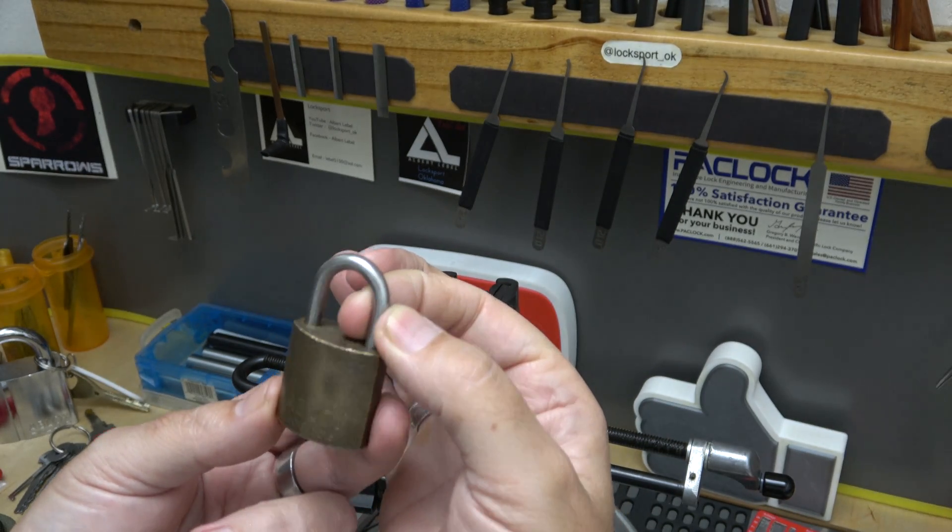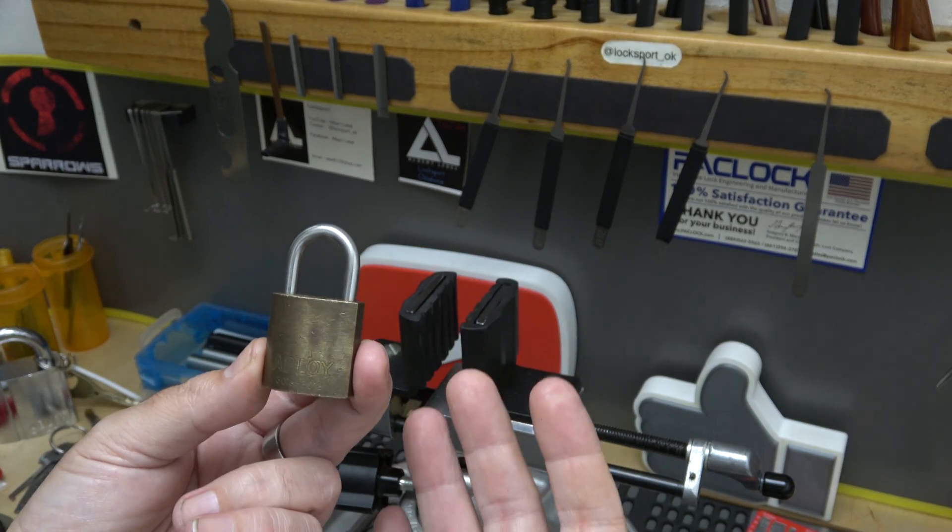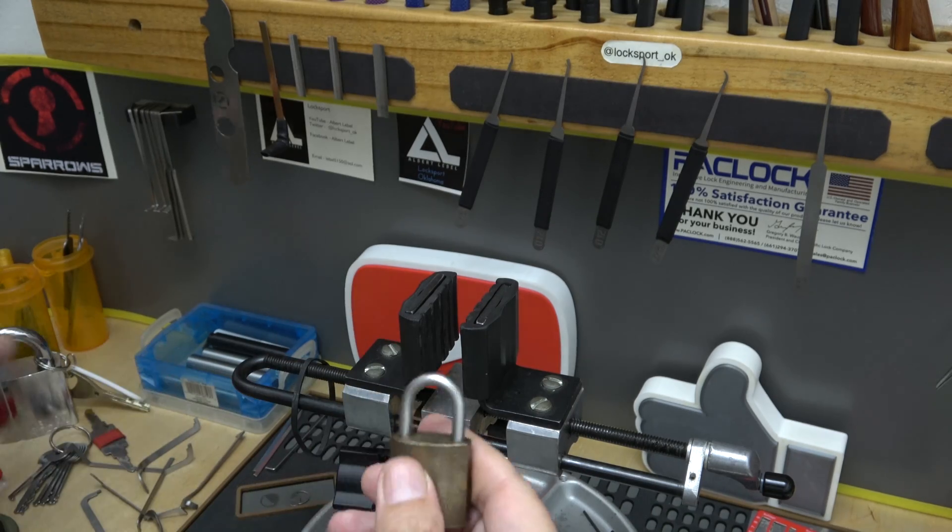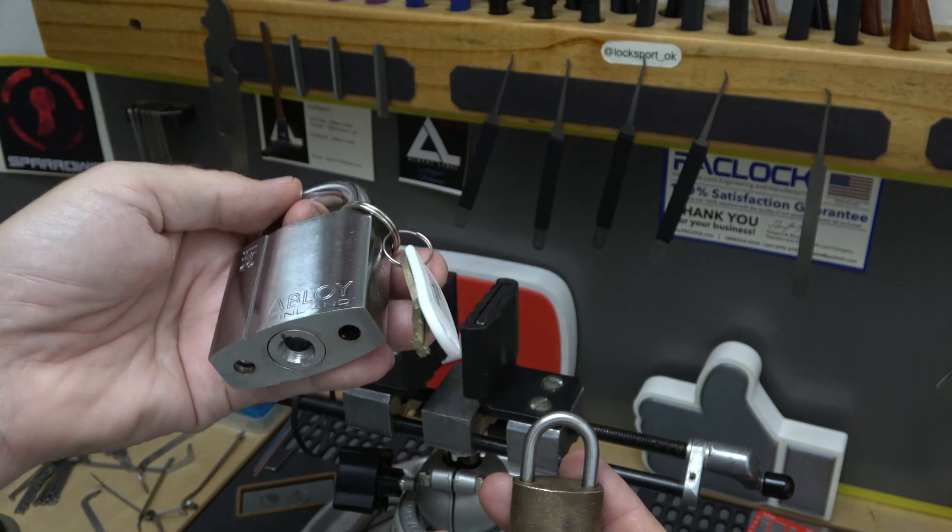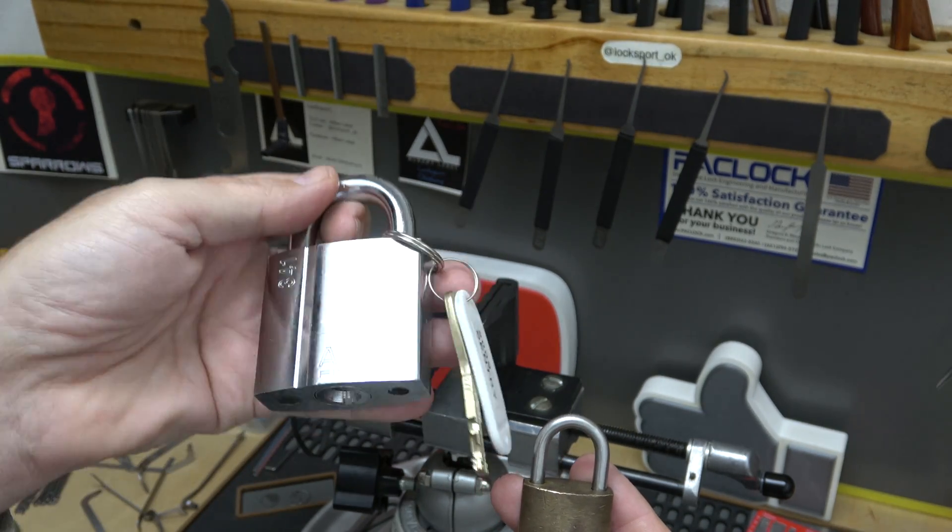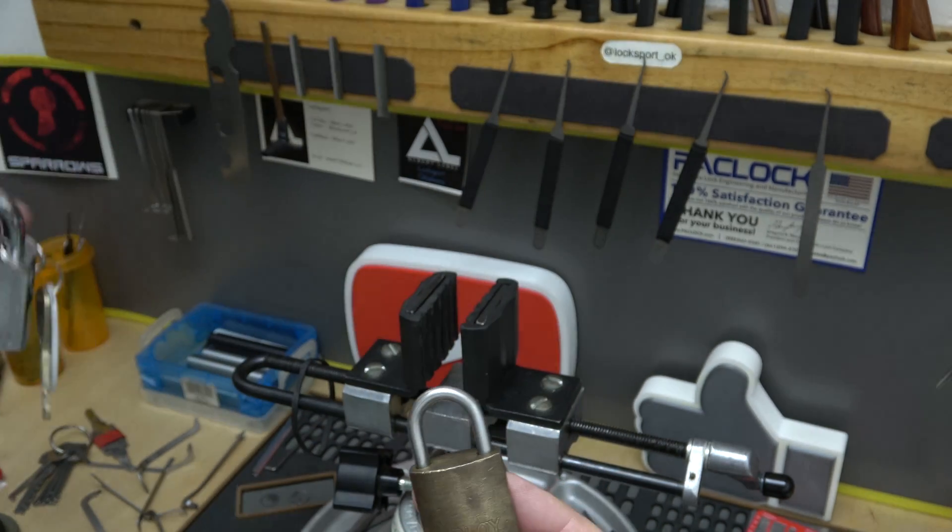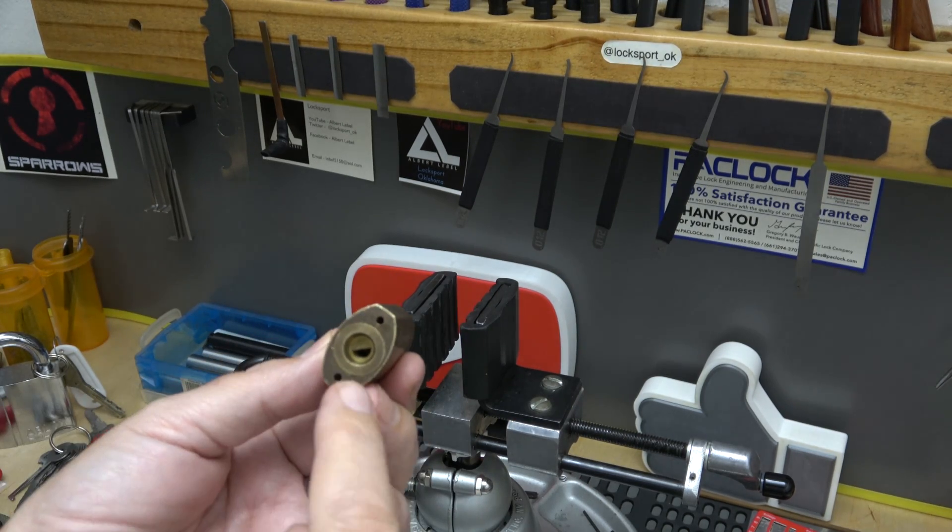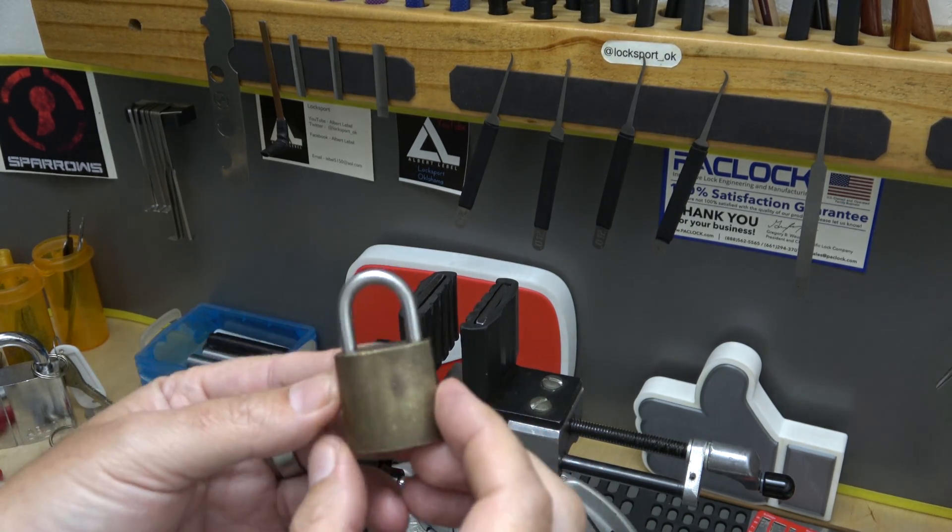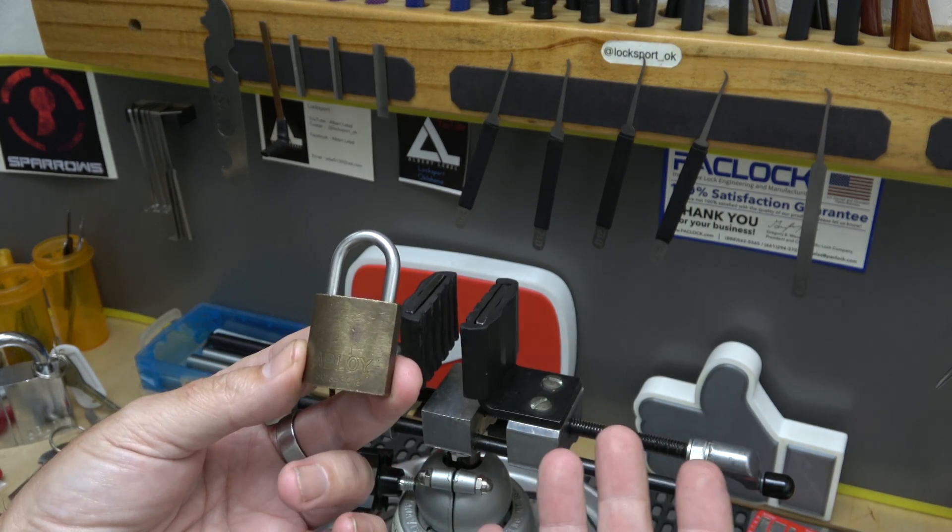So what is a high security lock? We know something like this is a high security lock. This is an Abloy 341 with the Abloy Century core in it. Absolutely high security. And again, Abloy core, different core than the Century, but in a lock of this size.